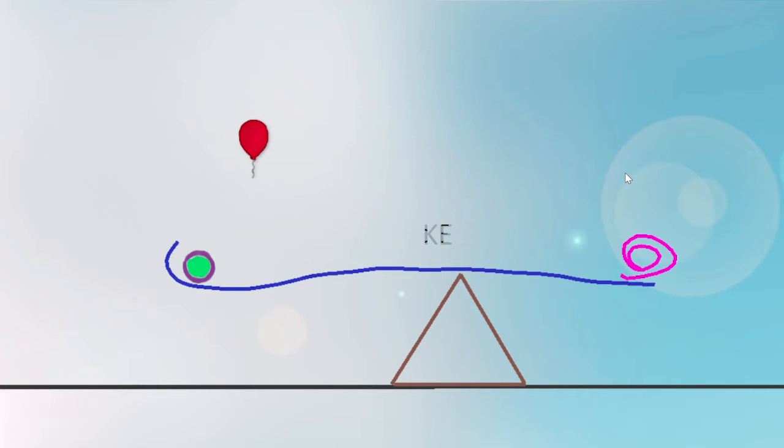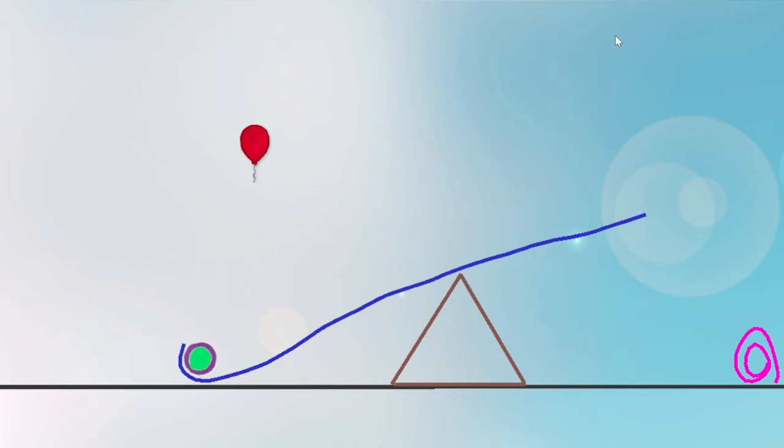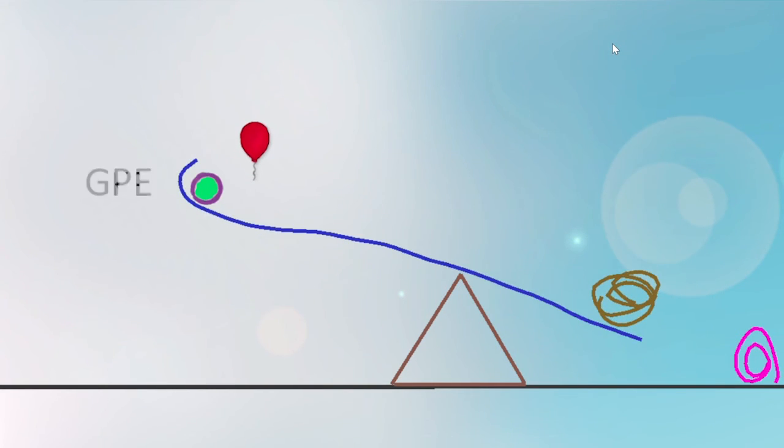Kinetic energy, or KE, is the energy of motion. Energy can transfer from one object to another. The ball gained GPE, it gained height, and it gained KE. It's now moving.